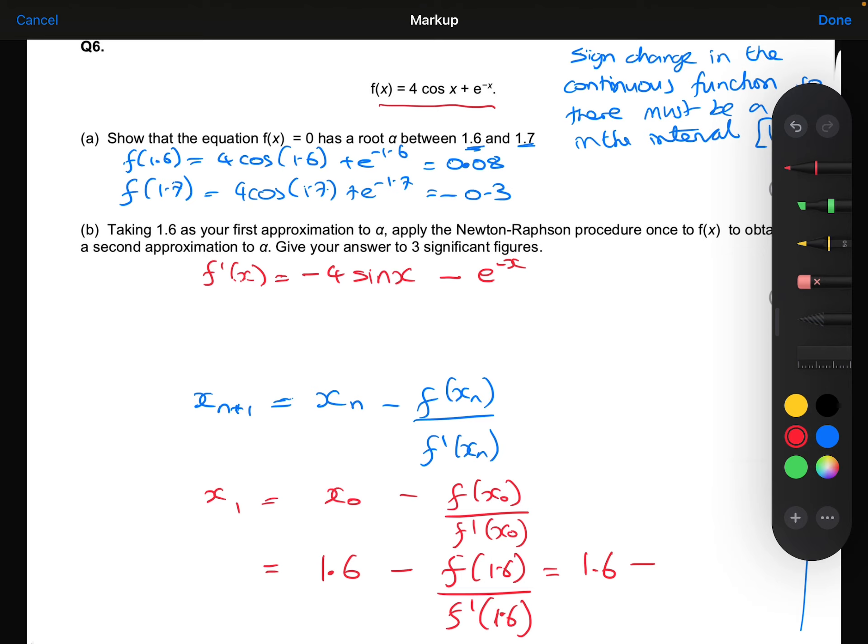To work out f(1.6), I substitute 1.6 into the original function, which gives 0.085. To work out f'(1.6), I substitute 1.6 into the derivative function, and then type that into the calculator.